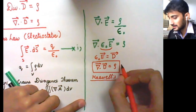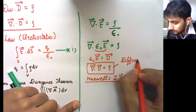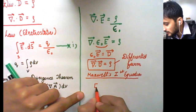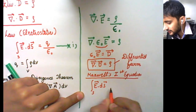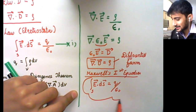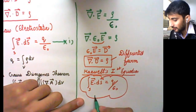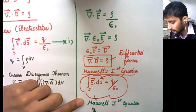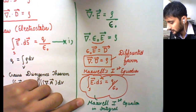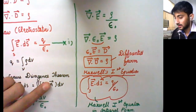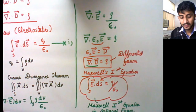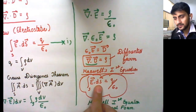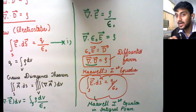In Maxwell's first equation, divergence of D = rho is the differential form. The surface integral E·dS = Q/ε₀, which is Gauss's law, is Maxwell's first equation in integral form. Remember: divergence of a vector quantity gives us the specification of flux coming out of a particular closed volume, and E·dS gives us the flux of electric field lines coming out of a closed surface area S.